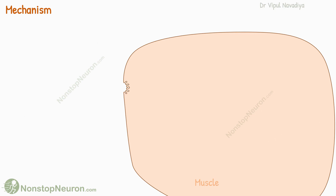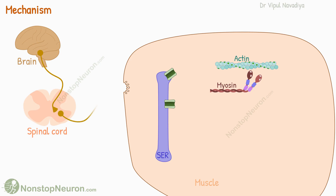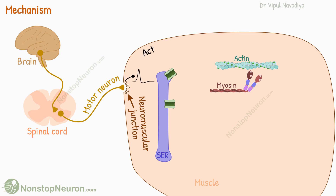This is a schematic diagram of muscle with sarcoplasmic reticulum and actin-myosin filaments. This is the brain; these are neurons taking signals from the brain to the motor neuron. The motor neuron connects to the muscle fiber at the neuromuscular junction. The incoming impulse produces an action potential in the post-synaptic membrane, which causes the opening of calcium channels on the membrane as well as on the sarcoplasmic endoplasmic reticulum.